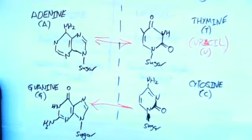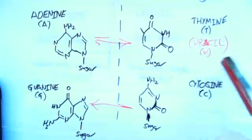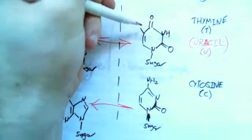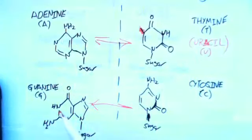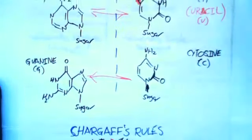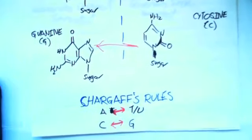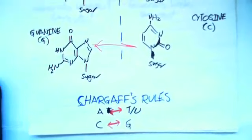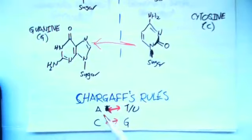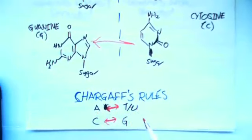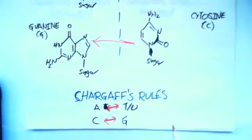RNA actually has uracil in the place of thymine. Uracil is very similar, just instead of this methyl group, that methyl group's gone. It also pairs to adenine, so in RNA you get adenine and uracil, A-U. In RNA you still get G-C, guanine pairing with cytosine. Those rules are called Chargaff's rules and they were the rules that helped Watson and Crick discover the structure of DNA.